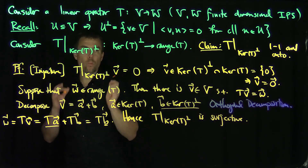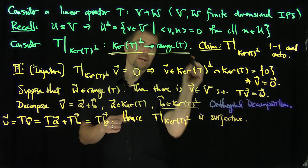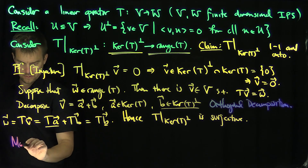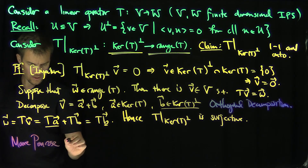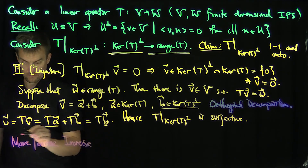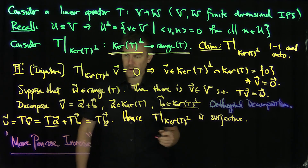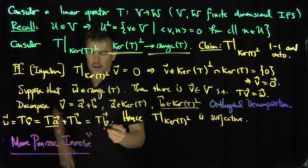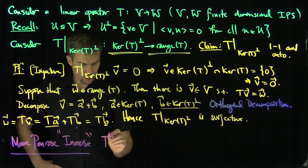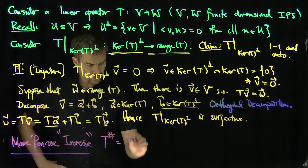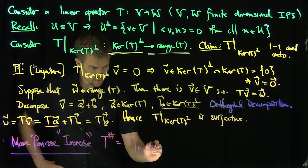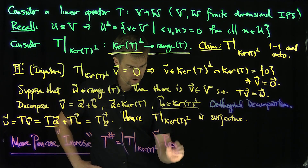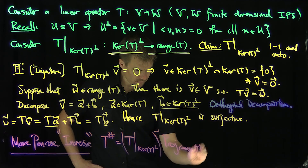Now I have a one-to-one and onto mapping of the kernel of T perpendicular onto the range of T, and this allows me to define the Moore-Penrose inverse of a matrix or operator. It's really a pseudo-inverse — not purely the inverse of the operator, because the null space may be non-degenerate. I'll call this T-sharp. T-sharp is really T restricted to the kernel of T perpendicular, inverted (since it's one-to-one and onto), and then composed with the orthogonal projection onto the range of T.